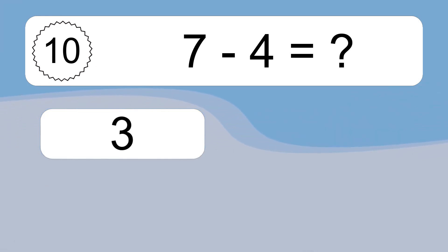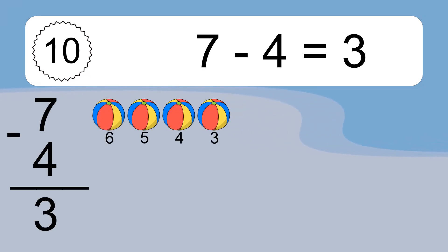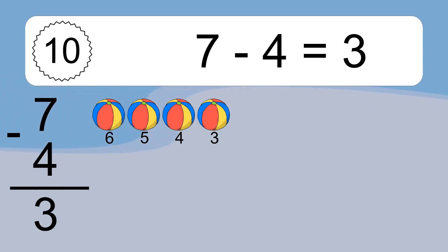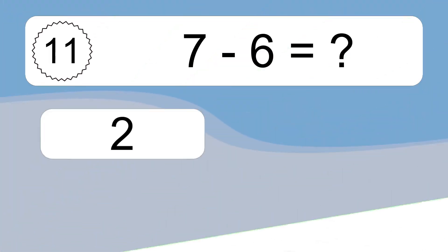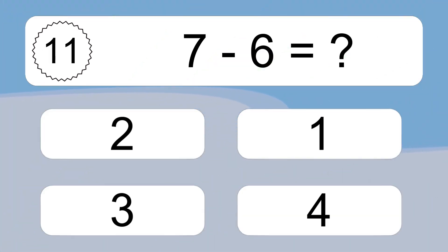7 minus 4 equals 3. Let's count it. 6, 5, 4, 3. 7 minus 6 equals what?